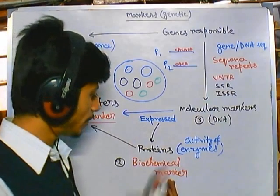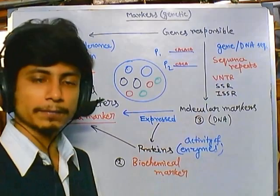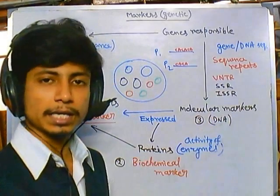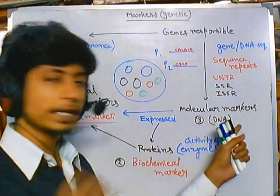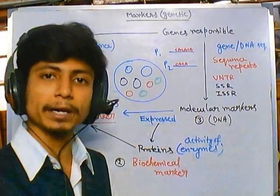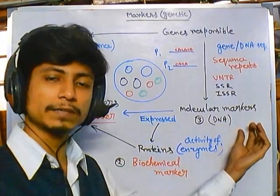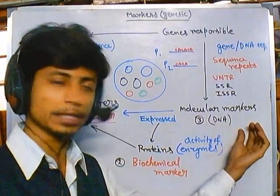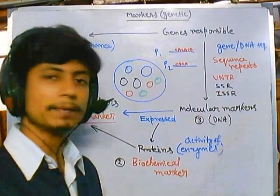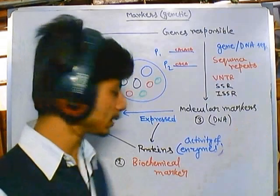Molecular markers — simply DNA markers like repeats — are very effective because they tell us the exact genetic makeup. They are very sensitive and give exact results as parameters. However, a fault is that most of these markers are dominant, so in recessive cases we cannot find the answer.